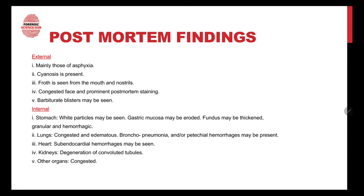Post-mortem findings can be of two types: external and internal. External findings mainly reflect asphyxia: cyanosis is present, froth can be seen coming from the mouth and nostrils, a congested face can be seen, and prominent post-mortem staining is observed.